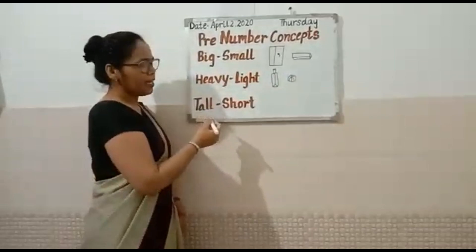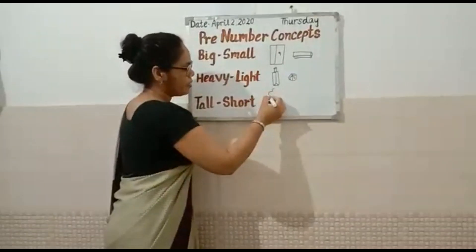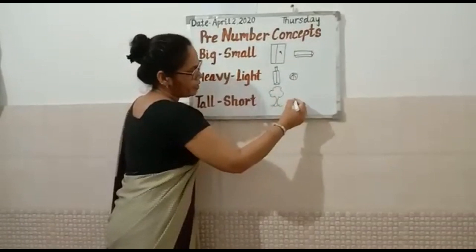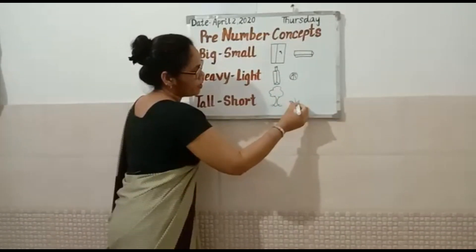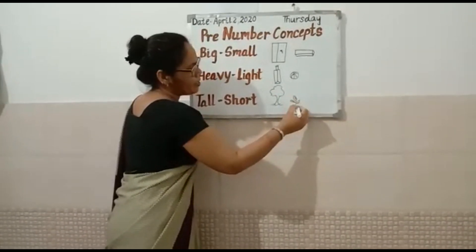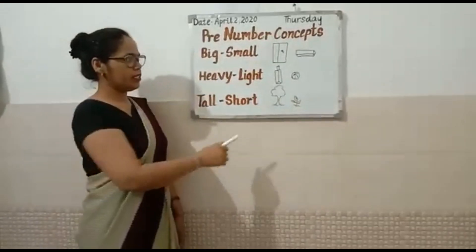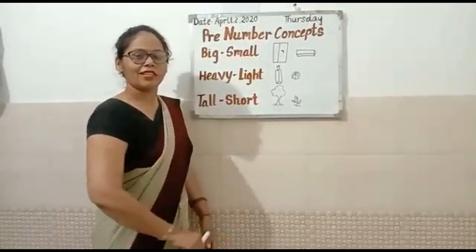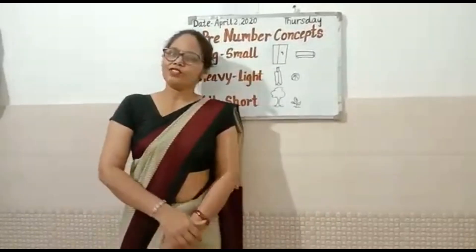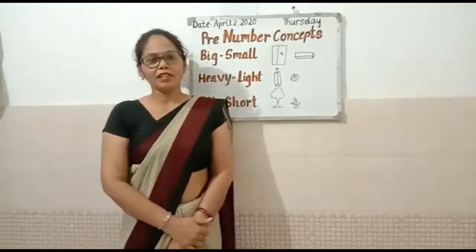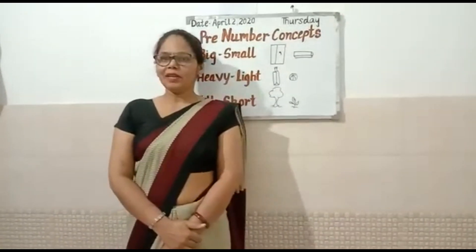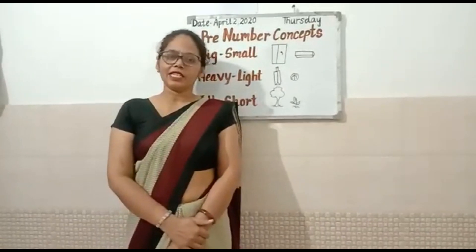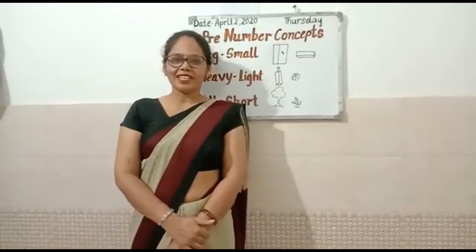For tall and short — this tree is tall but the plant is short. Now dear students, find out other examples from your home. Dear parents, kindly help your child with different things to clear these concepts. Thank you, have a nice day.